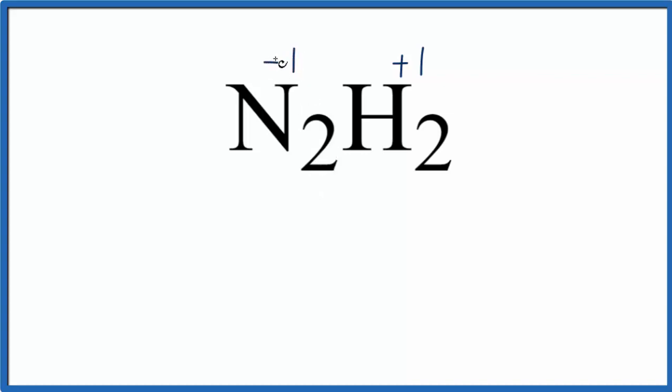Two times minus one, that's minus two. Two times plus one, that's plus two. Add them up, you get zero.